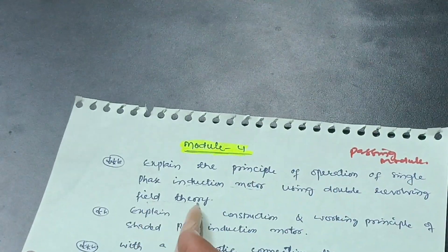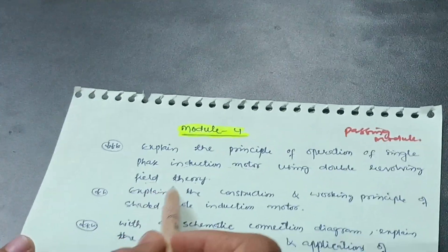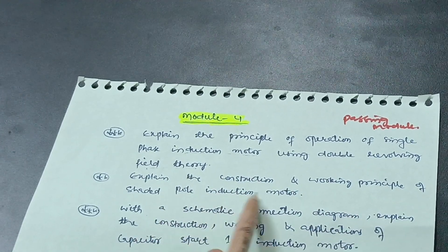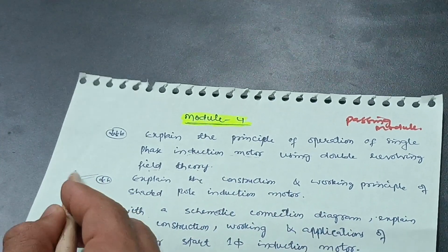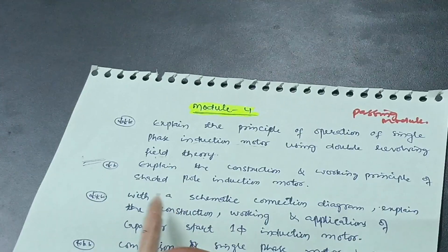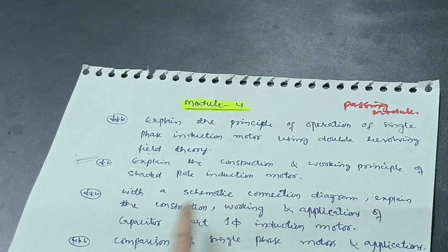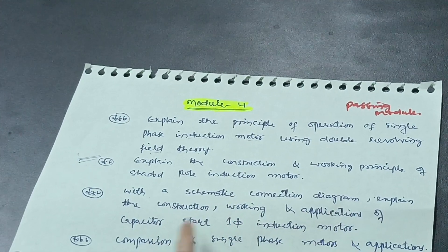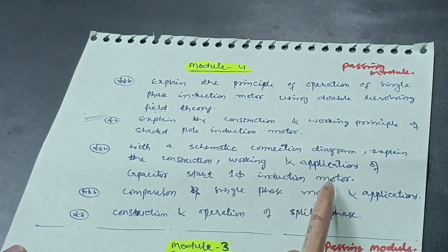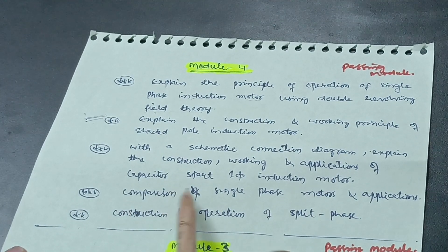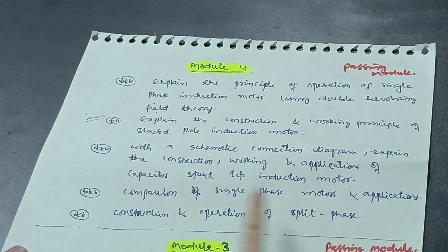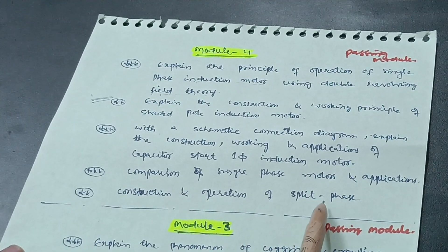The fourth module is also a passing module. The important questions here are: explain the principle of operation of a single-phase induction motor using double revolving field theory; explain the construction and working principle of a shaded pole induction motor — this is a super important question in this module; and with a systematic connection diagram, explain the construction, working and applications of a capacitor start one-phase induction motor.